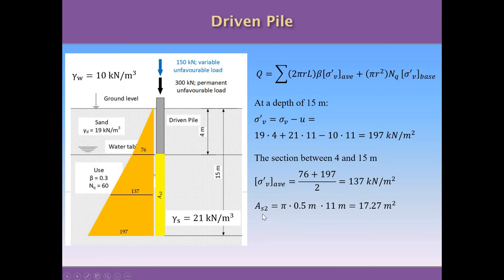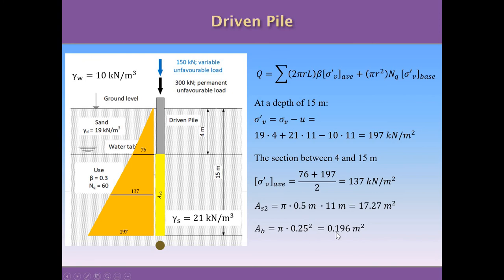The lateral area of the pile in contact with the second layer is π × diameter × 11 m = 17.27 m². Finally, the area of the base of the pile is π × (0.25)² = 0.196 m².